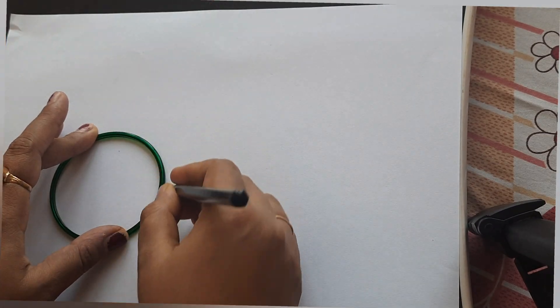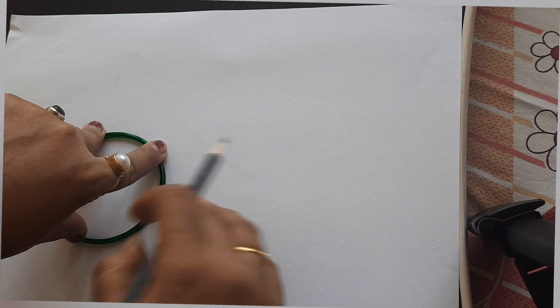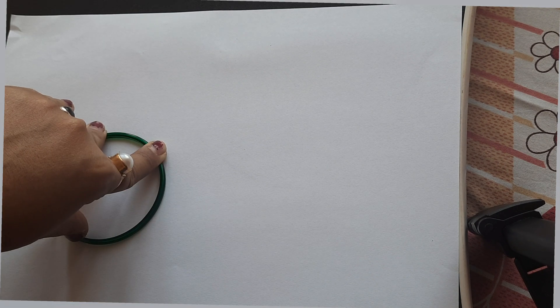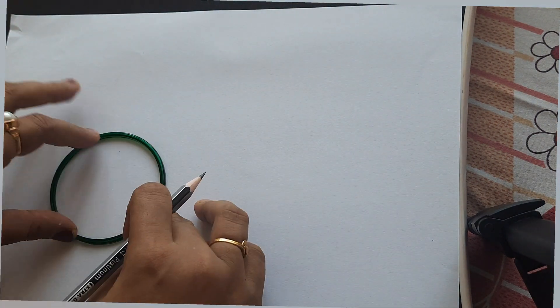Here I have taken a bangle and I am drawing the circle so that I can find out the center of the circle and the diameter and radius. Now my circle drawing is almost complete.